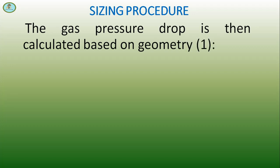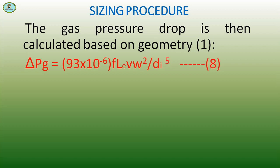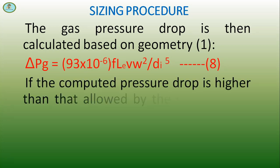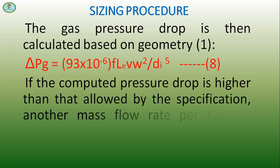ΔPg = 93 × 10^-6 × fLe × V × W² / Dᵢ^5. This is equation 8. If the computed pressure drop is higher than that allowed by the specification, another mass flow rate per tube is assumed and the procedure is repeated.